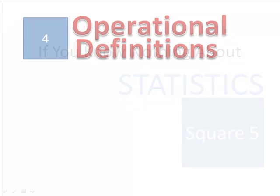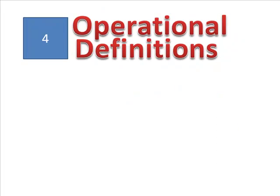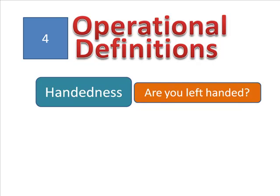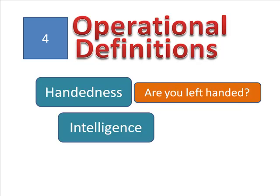In square 4, you meet operational definitions. You defined handedness as a person's response to the question, 'Are you left or right-handed?' And you defined intelligence as the score on a standard intelligence test.